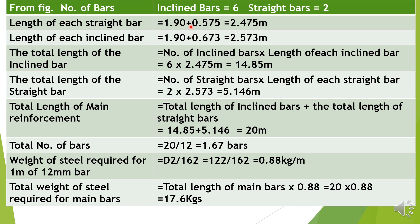From the figure of the bars: there are 6 inclined bars and 2 straight bars. Length of each straight bar is equal to 1.9 plus 0.575, which equals 2.475 meters. Length of each inclined bar is equal to 1.9 plus 0.673, which equals 2.573 meters. Refer the earlier sketches.